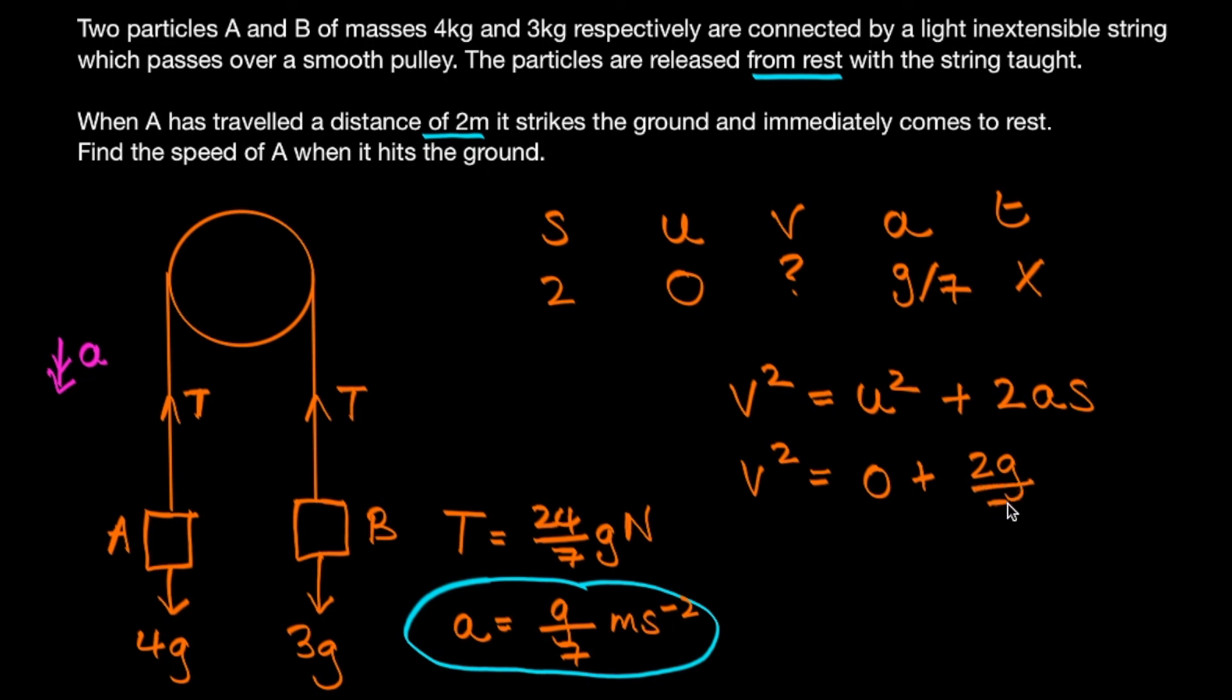So v squared equals 4g over 7, and therefore v is equal to the square root of 4g over 7, which is 2.37 meters per second to three significant figures.